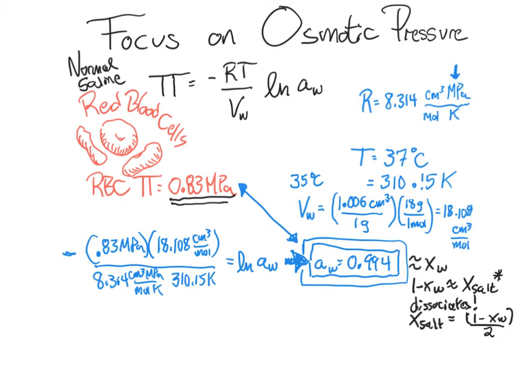So now, let's get the x salt is equal to 0.0029, which seems like it's going to be too small to do anything, but really, trust me, it's going to work out. So you remember the mole fraction is defined as a number of moles of the thing of interest. So we'll say moles of salt divided by the total moles, which in this case is moles of salt plus moles of water.